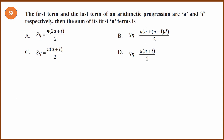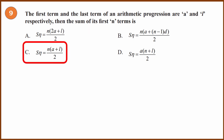Ninth question: a formula question. The first term and last term of an arithmetic progression are A and L. The correct formula for the sum of n terms is: Sn = (A + L) × n/2. That is the sum of n terms.